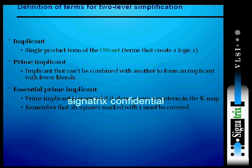In the Karnaugh map you have a number of literals, and we need to reduce those equations to a minimum number of literals. This is what a prime implicant is.